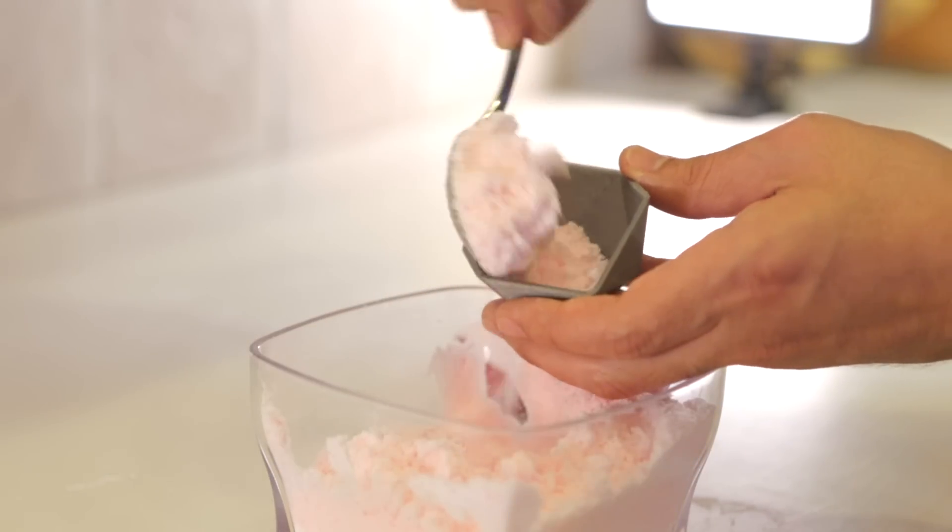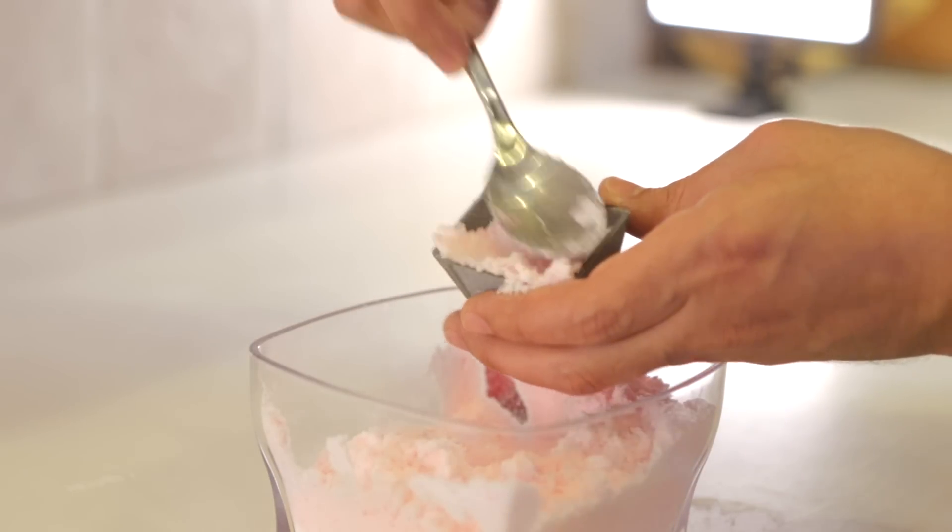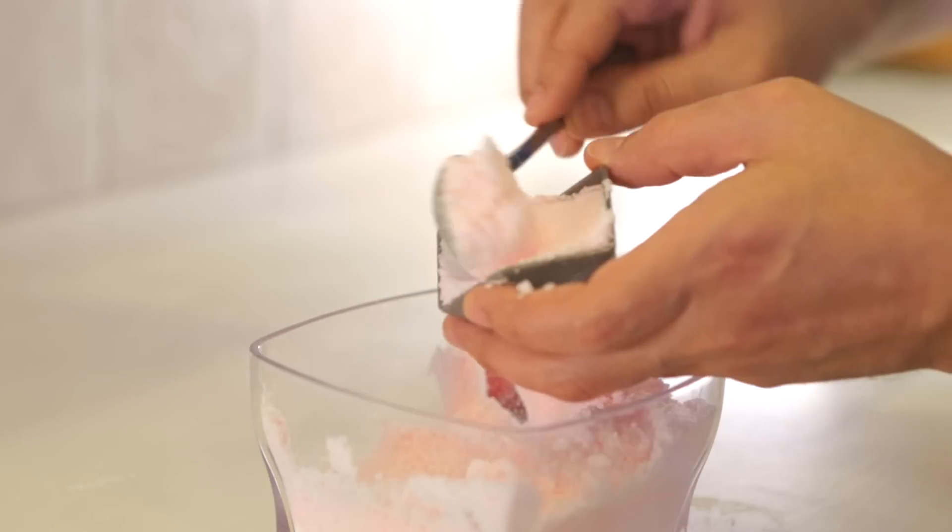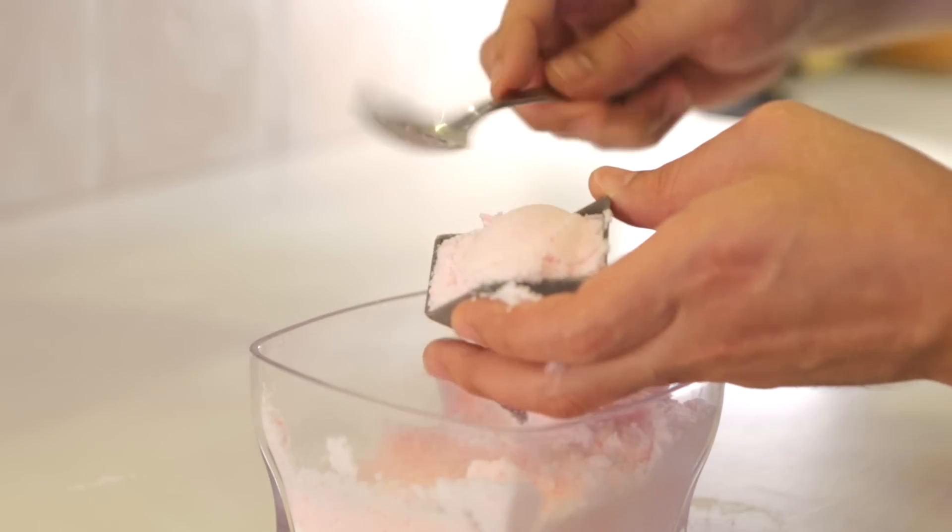Once it's all nicely blended, you'll need to pack the mix into the molds as tightly as possible. And it's a good idea to pack more than necessary so that the two halves actually fuse together.